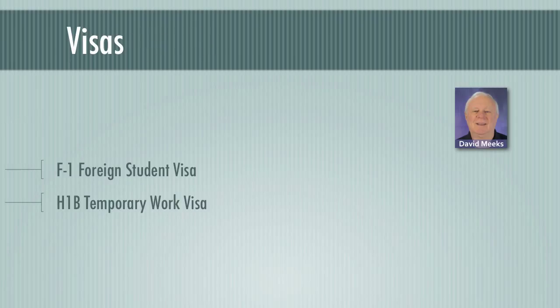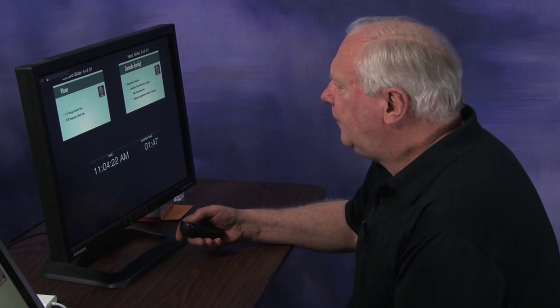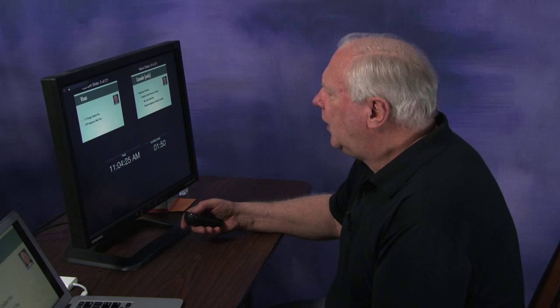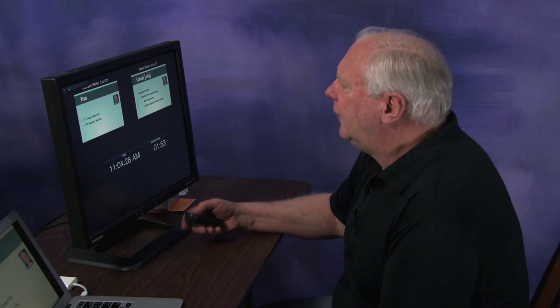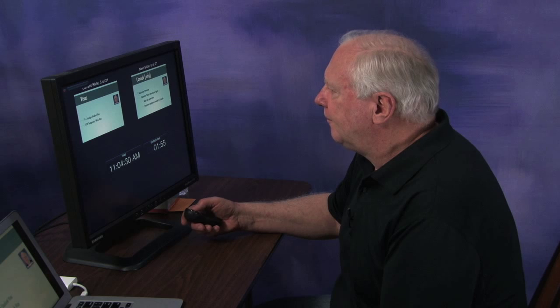Visas — there are usually two that would be involved. One is an F-1, which is a foreign student visa. And the other is an H-1B, which is a temporary work visa. We're going to discuss these two at the very end, as we know there are some people viewing our program that are on visas.